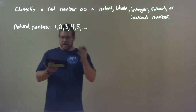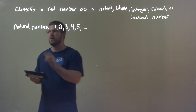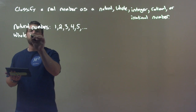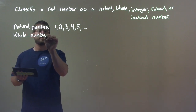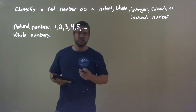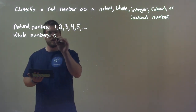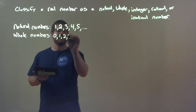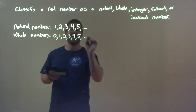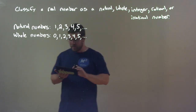The other type of numbers we'll see is called the whole numbers. The whole numbers include all of the natural numbers, but they add zero to it. So zero, one, two, three, four, five, and so on — we call those the whole numbers.